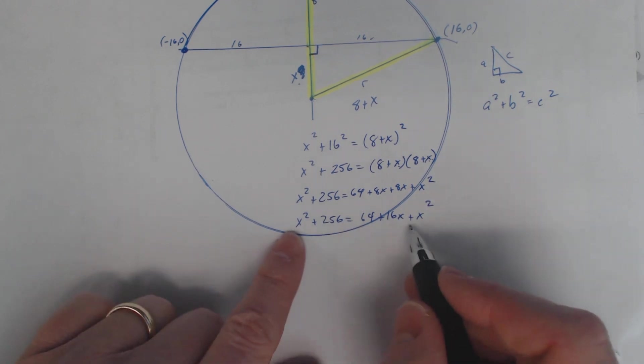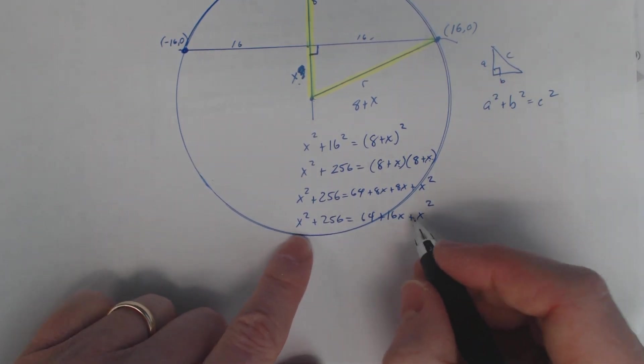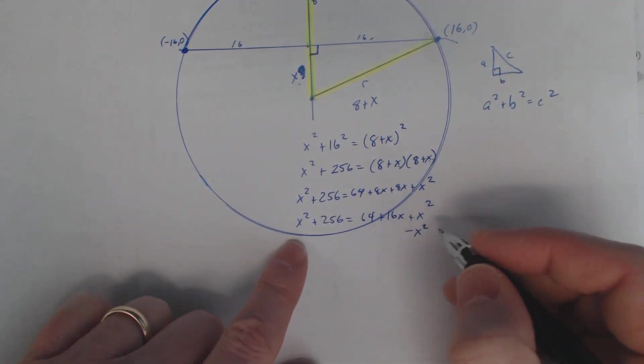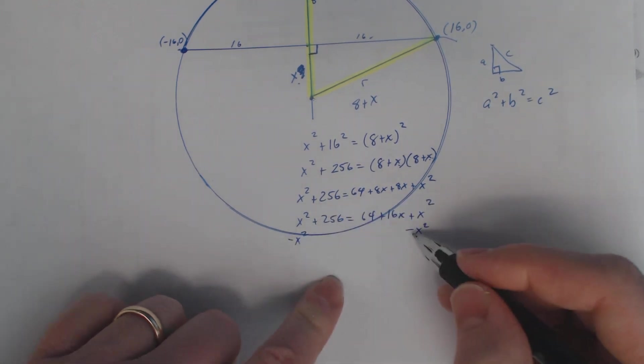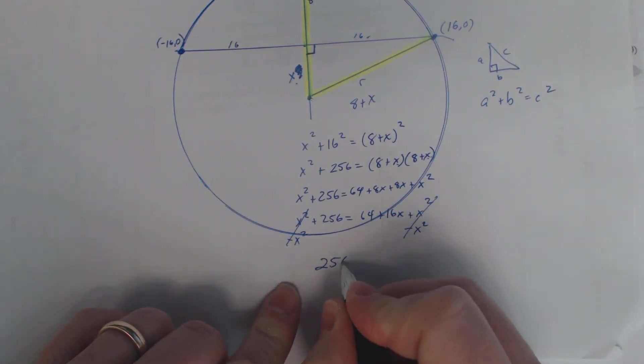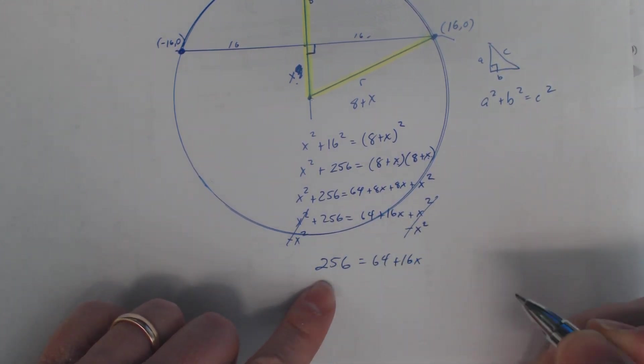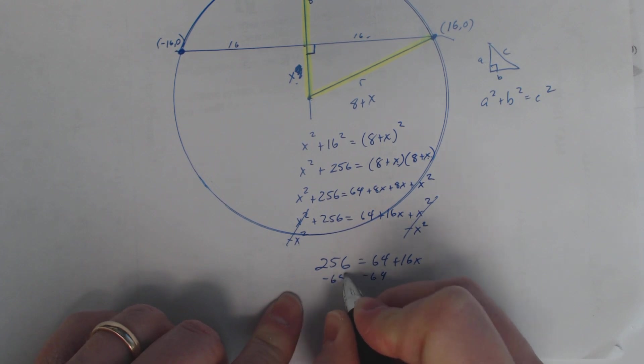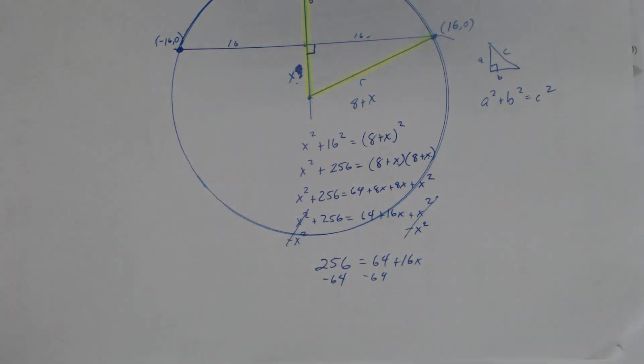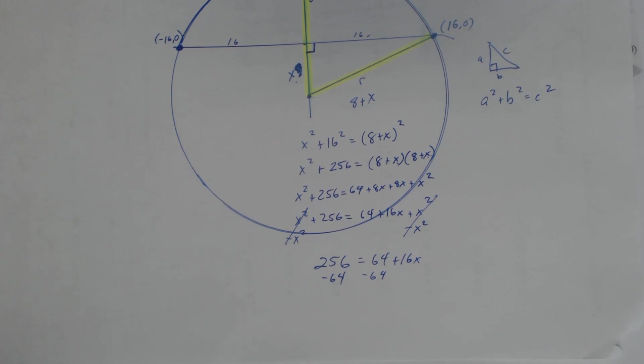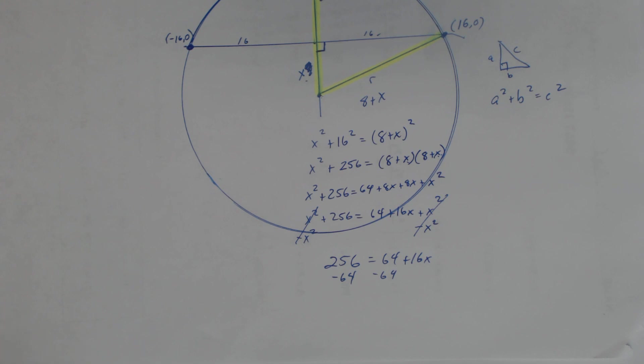All right, now let's see. We'd have x squared plus 256 equals 64 plus 16x plus x squared. Okay, so let's solve for x here. What's all we got is x's. Well, if I subtract x squared from this side and I subtract x squared from that side, it would cancel, so you're left with 256 equals 64 plus 16x. If I subtract off 64 - let's see what is, just to make sure, 256 minus 64. Let me get my calculator going here.